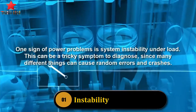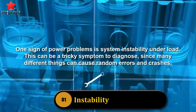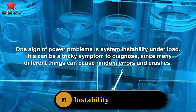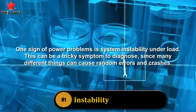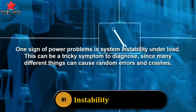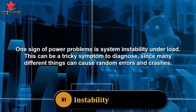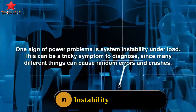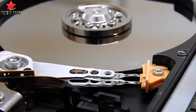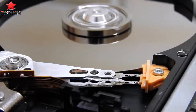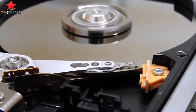Instability. One sign of a power problem is system instability under load. This can be a tricky symptom to diagnose since many different things can cause random errors and crashes. If you can rule out software problems, bad hard drive sectors, and a virus, continued unexplained crashes could point to power supply failures.